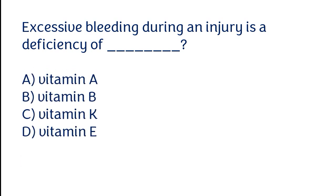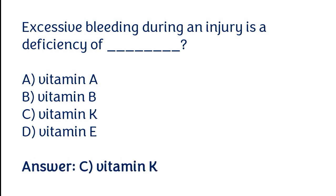Excessive bleeding during an injury is a deficiency of: vitamin A, vitamin B, vitamin K, or vitamin E. The correct answer is option C — excessive bleeding during an injury is due to a deficiency of vitamin K.